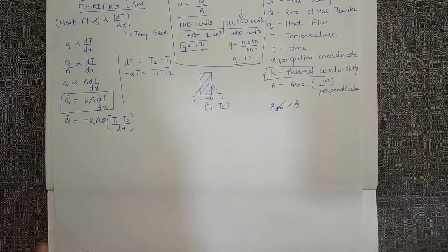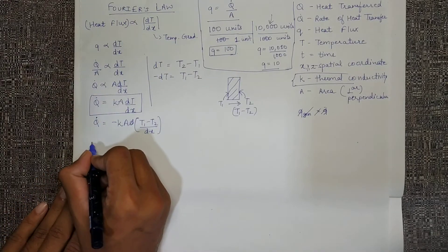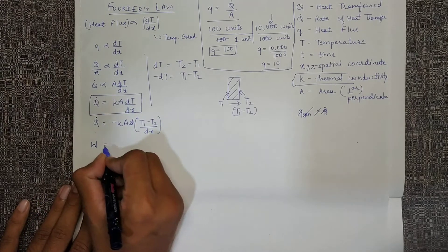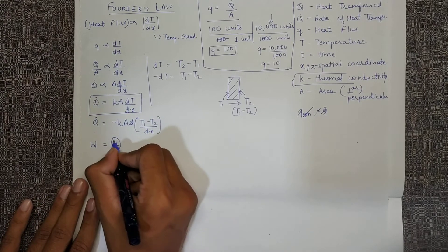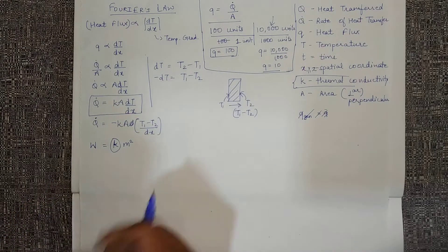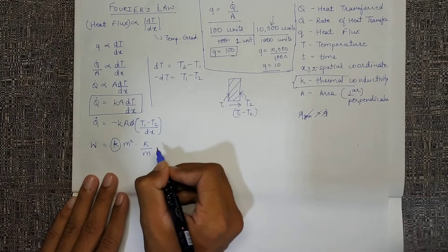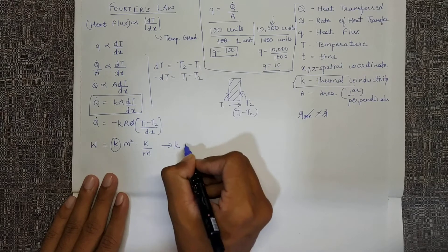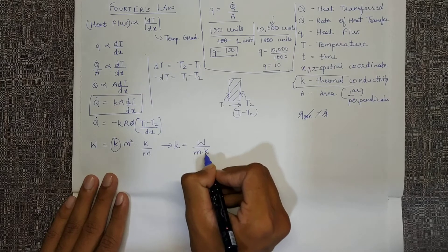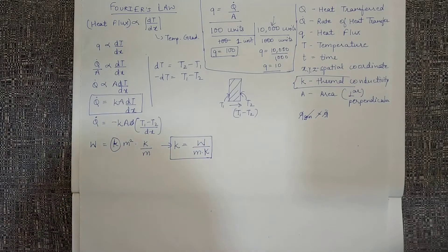And we will look at the units quickly. So we already know the unit of Q as watt because that is the rate of heat transfer. K we don't know, so we want to find out the units of k. Area has the unit of meters squared. Temperature has units of Kelvin, and the distance has units of meter. So this gives me the unit of k as watts per meter Kelvin. So this is the unit of k thermal conductivity: watt per meter Kelvin.